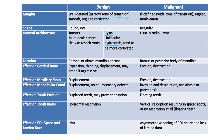For malignancies, the internal architecture is usually going to be radiolucent. One exception is the osteosarcoma, which will be irregular and radiopaque.